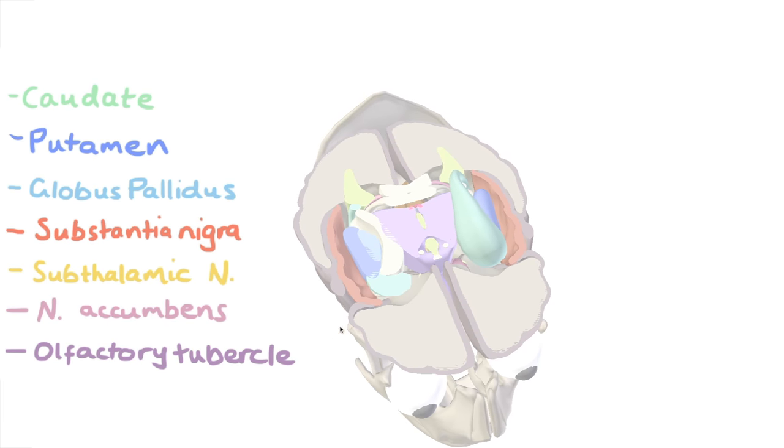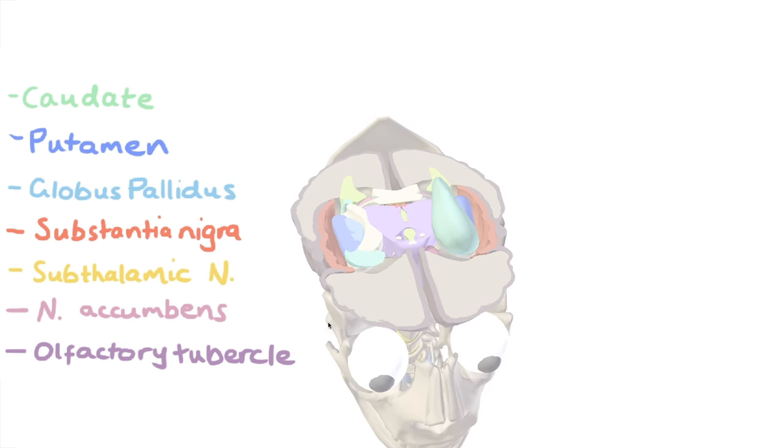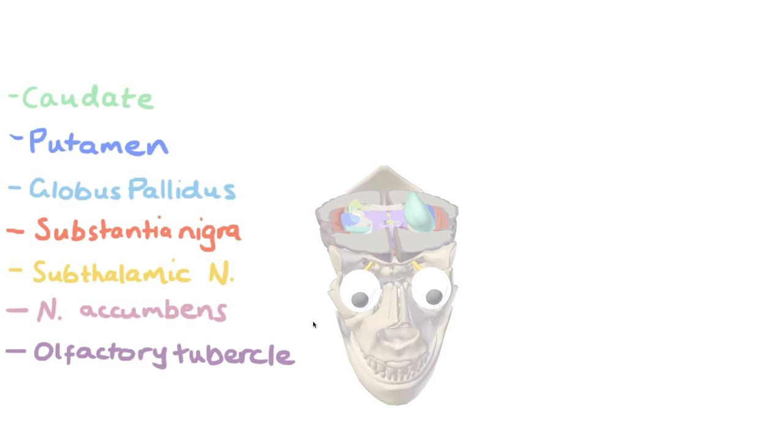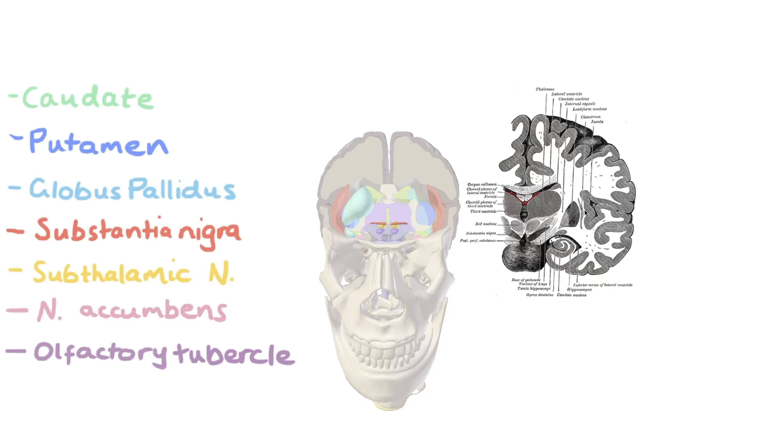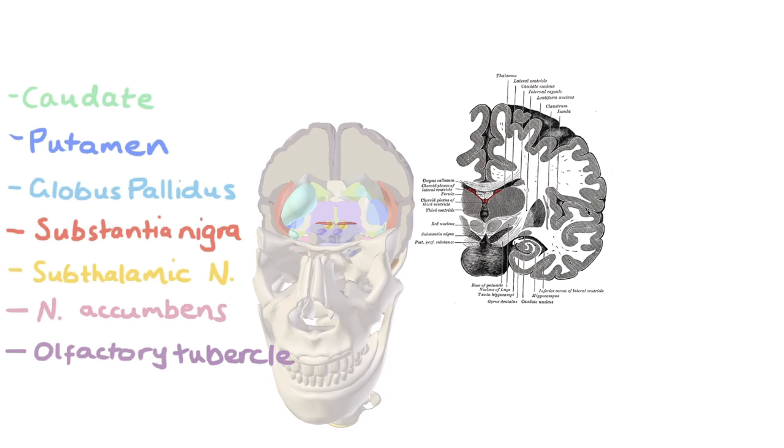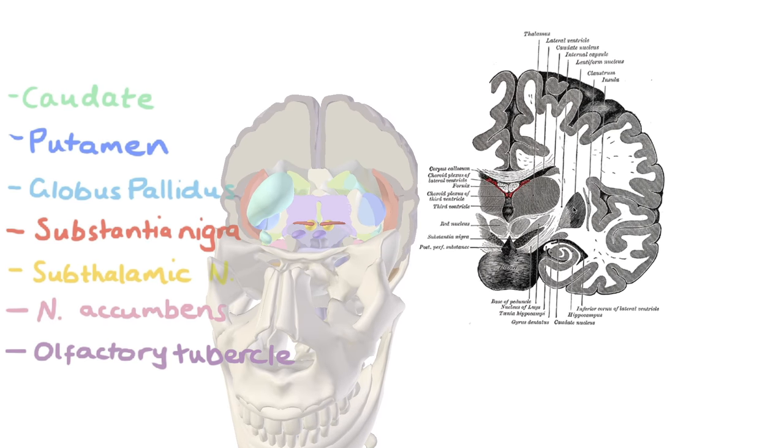We'll get rid of our MRI now and we'll bring up a coronal section. So here's another image, the likes of which you may have seen before. It's a coronal section, an old one from Gray's Anatomy.